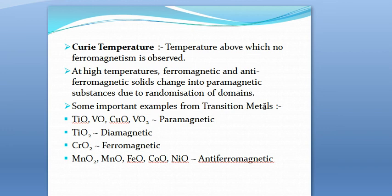Finally, some important examples from transition metals: transition metal elements and their compounds can act as magnets. We have examples of paramagnetic, diamagnetic, ferromagnetic, antiferromagnetic, and ferrimagnetic substances all drawn from transition metals and their compounds.